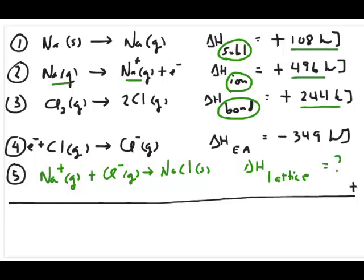And then lastly, you need to take that chlorine in the atomic state, in the atom state, to an ion. So in order to do that, you need to add an electron to your chlorine, which is right here.